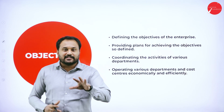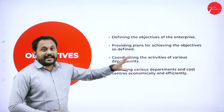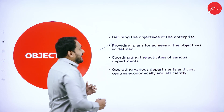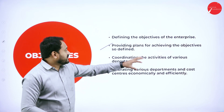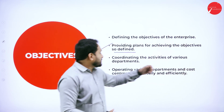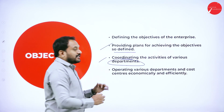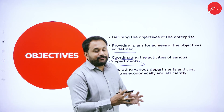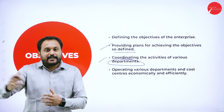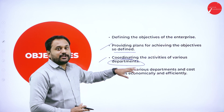Let's see the objectives of budgetary control. The first objective is that it is objective-oriented — it defines the objectives of the enterprise, so it is goal-oriented. The second one is providing plans for achieving those defined objectives, ensuring they are fulfilled. The third one is coordinating the activities of various departments so that each department coordinates through budgetary control and knows what other departments are able to do.